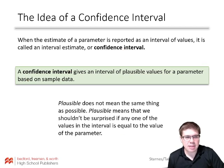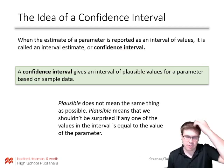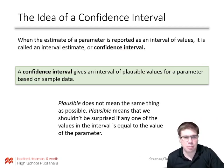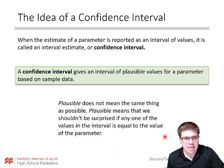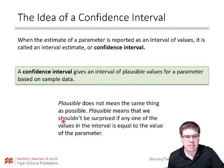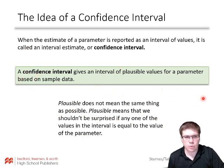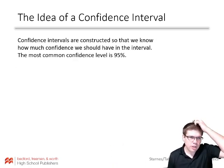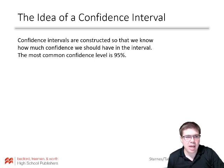Plausible does not mean the same thing as possible. With statistics, almost anything is possible. But plausible means that we shouldn't be surprised if any one of the values in the interval is equal to the value of the parameter. This is important — this is stuff that people get wrong. It gives us a range of plausible values for a parameter. Confidence intervals are constructed so that we know just how much confidence we should have in an interval.